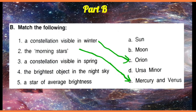A constellation visible in spring — in spring season, it was Ursa Major and Ursa Minor, so Ursa Minor. The brightest object in the night sky — that is, we all know, the Moon. A star of average brightness is the Sun.